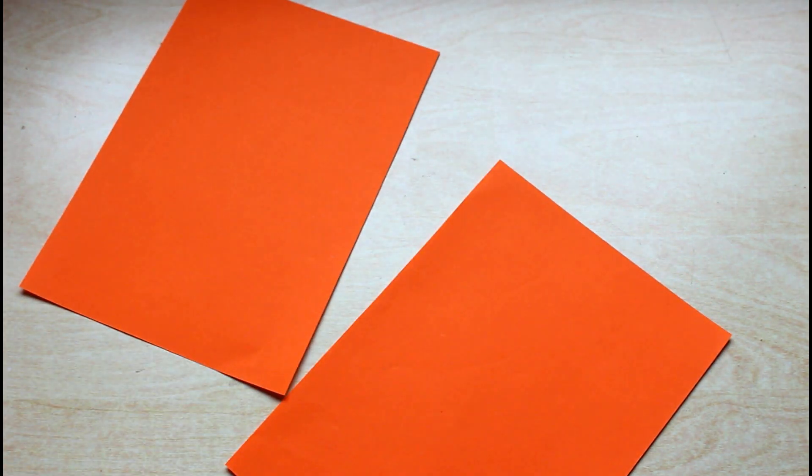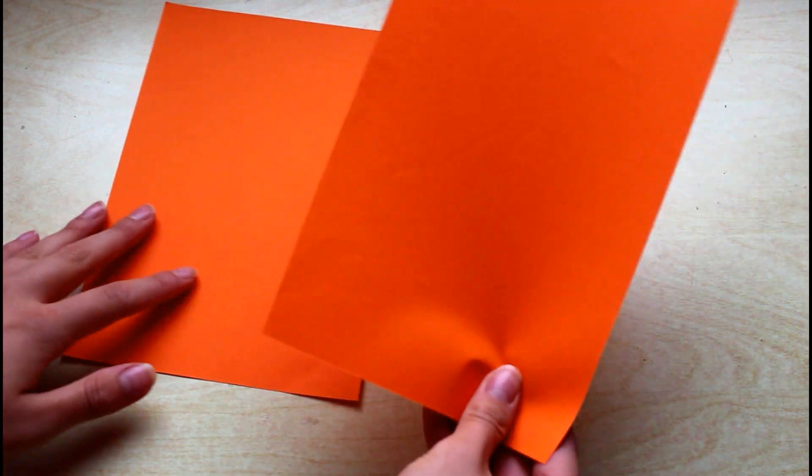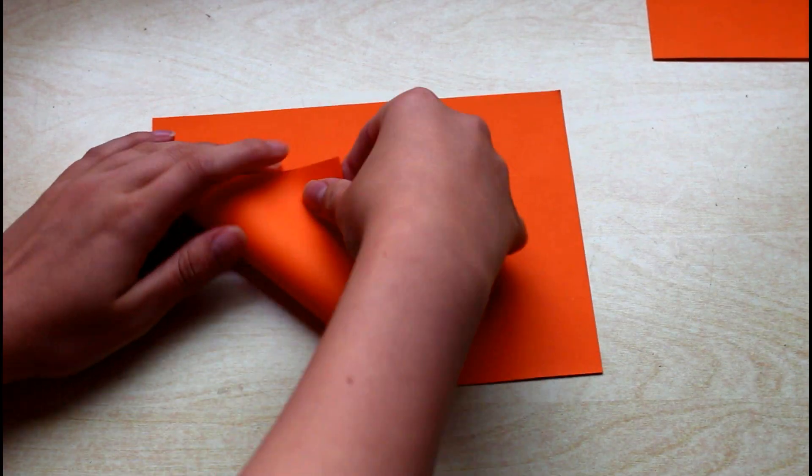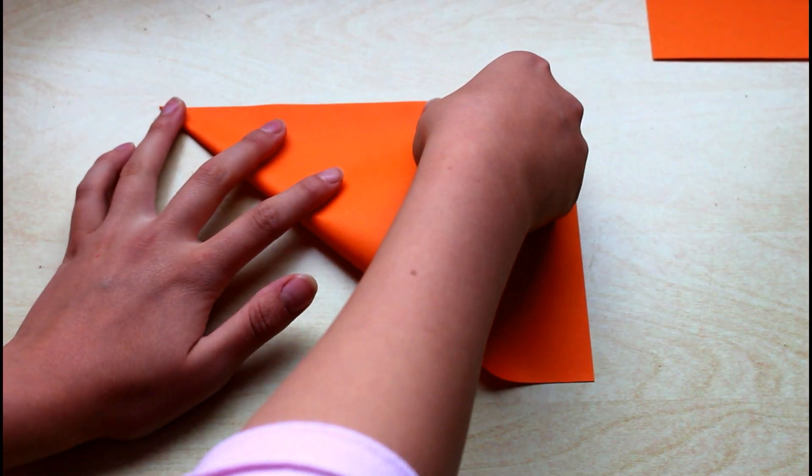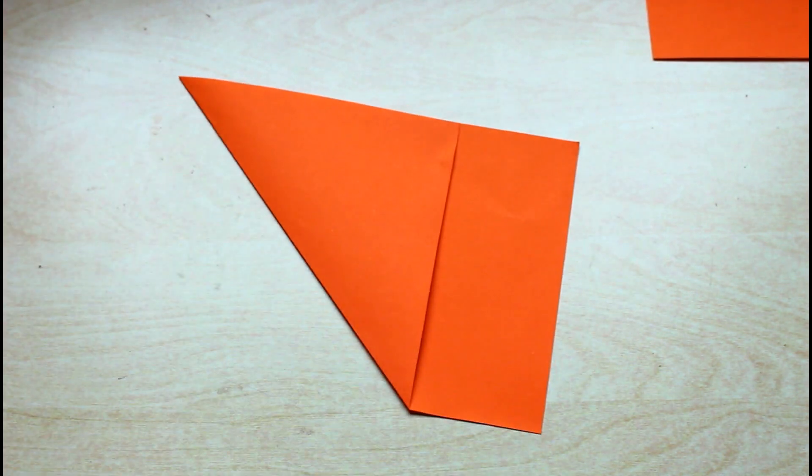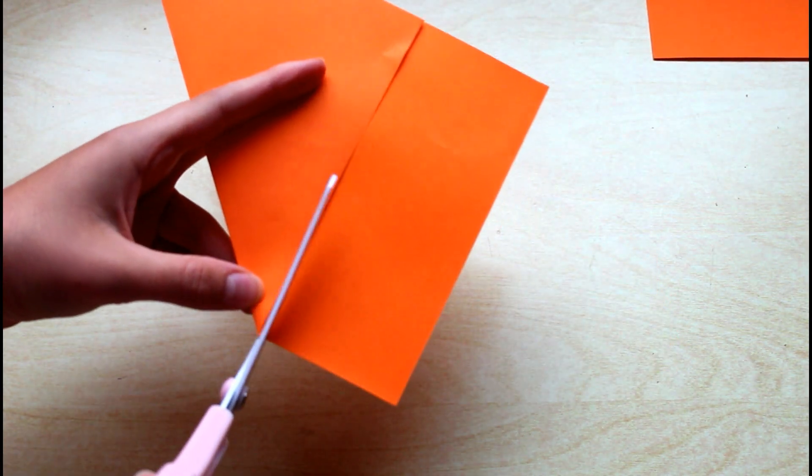When I've cut it in half, I'm going to put one sheet to the side because I'm going to be using that later. Then I'm going to take the other sheet and fold one of the bottom corners up to the top edge and flatten down the fold. Then take my scissors again and cut off the excess piece. I won't be using this later, so you can just put that to one side.